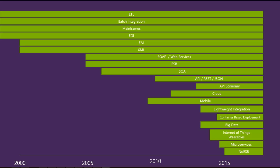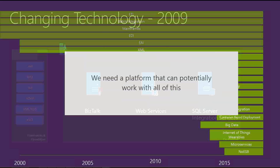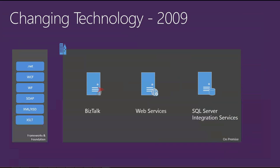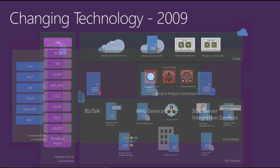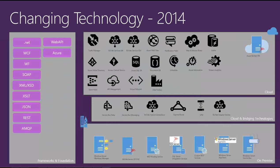That led us to think about two angles of change: architecture and technology. In 2009, things like BizTalk and SQL Server integration formed the heart of our integration capability, alongside web services. As we got into the cloud space, new server technologies appeared and we started having this emerging cloud capability for integration, beginning to talk about iPaaS as a cloud paradigm. Then as Azure grew, the toolbox kept growing.